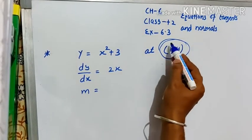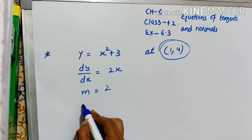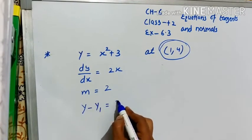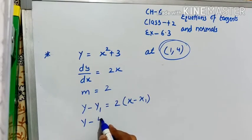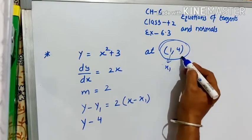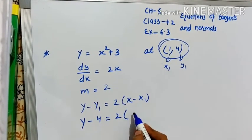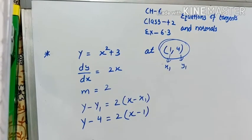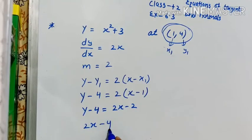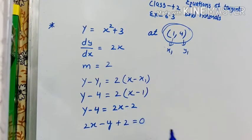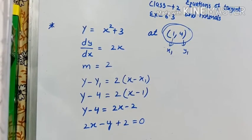That is 1, 4. Put x is equal to 1, we get 2. So 2 is the slope of tangent. Then equation of tangent will be y minus y1 is equal to slope into x minus x1. Now y minus y1, y1 is 4. Put here, we get 2 times x minus x1, x1 is equal to 1. We get y minus 4 is equal to 2x minus 2. By simplifying we get 2x minus y plus 2 is equal to 0. This is the answer.